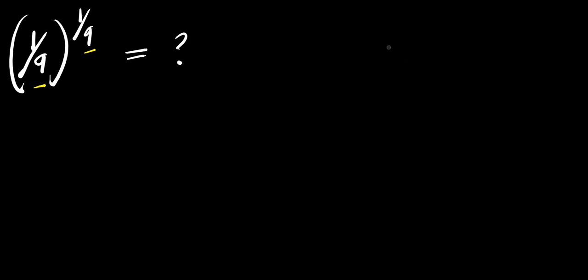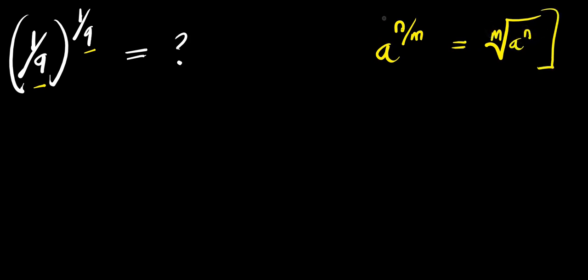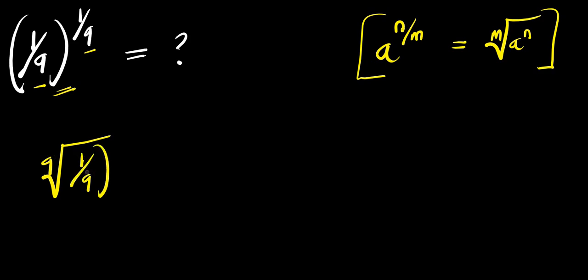What we are going to do is apply this identity: if you have a to the power of n divided by m, this equals the m-th root of a to the power of n. So we can apply this same identity here — that means we are going to have the 9th root of 1 divided by 9, raised to the power of 1, which gives us the 9th root of 1 divided by 9.